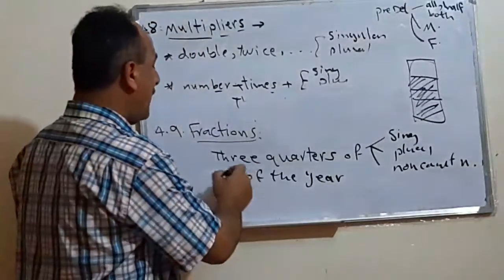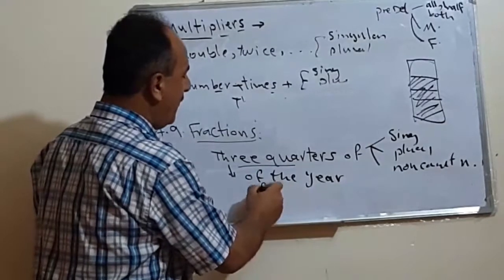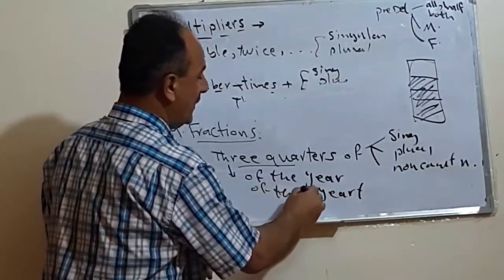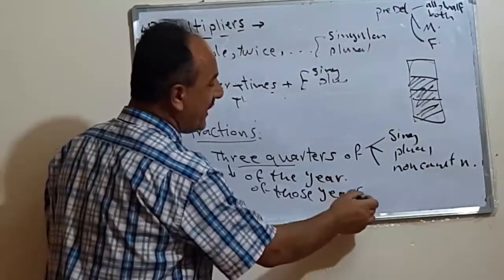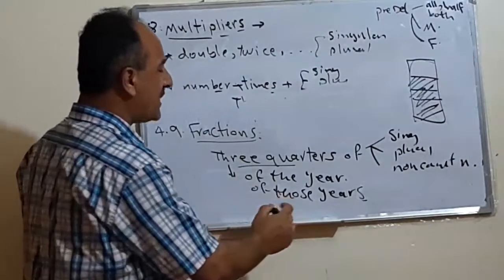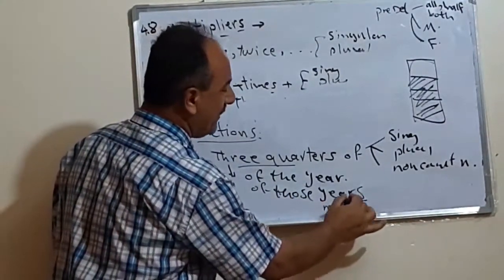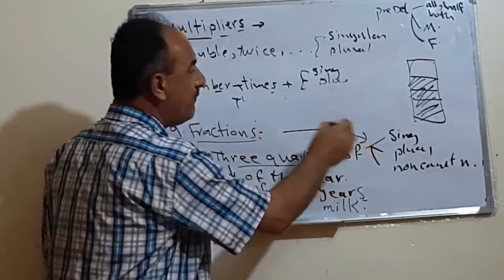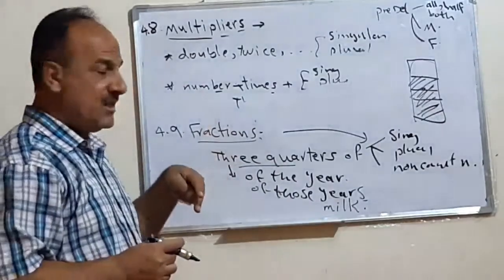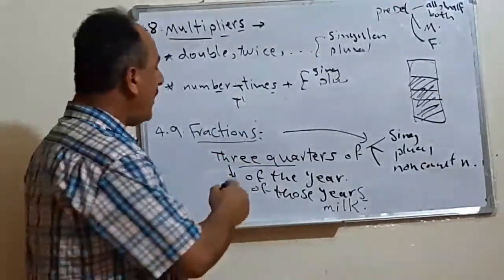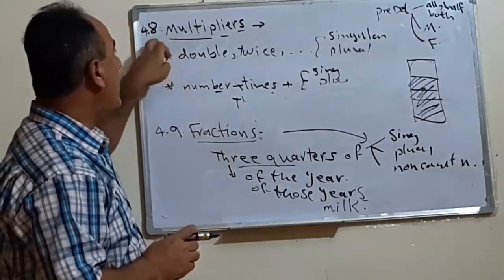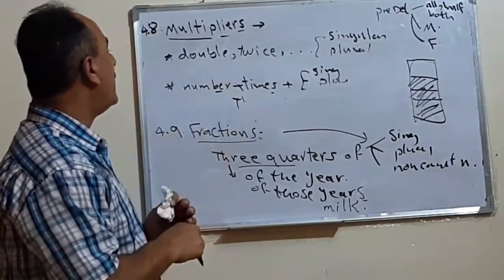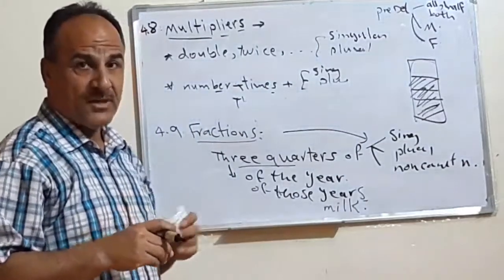For example, 'three quarters of the year' — where year is singular. We can also say 'three quarters of those years' — where years is plural. And we can say 'three quarters of the milk' — where milk is non-count. So fractions like three quarters, two fifths, or nine sevenths follow the same pattern. This completes the three types of pre-determiners, and we now move on to what we call the post-determiner.